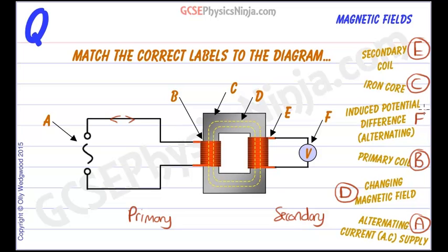That will be an alternating voltage as well, an alternating current going backwards and forwards.